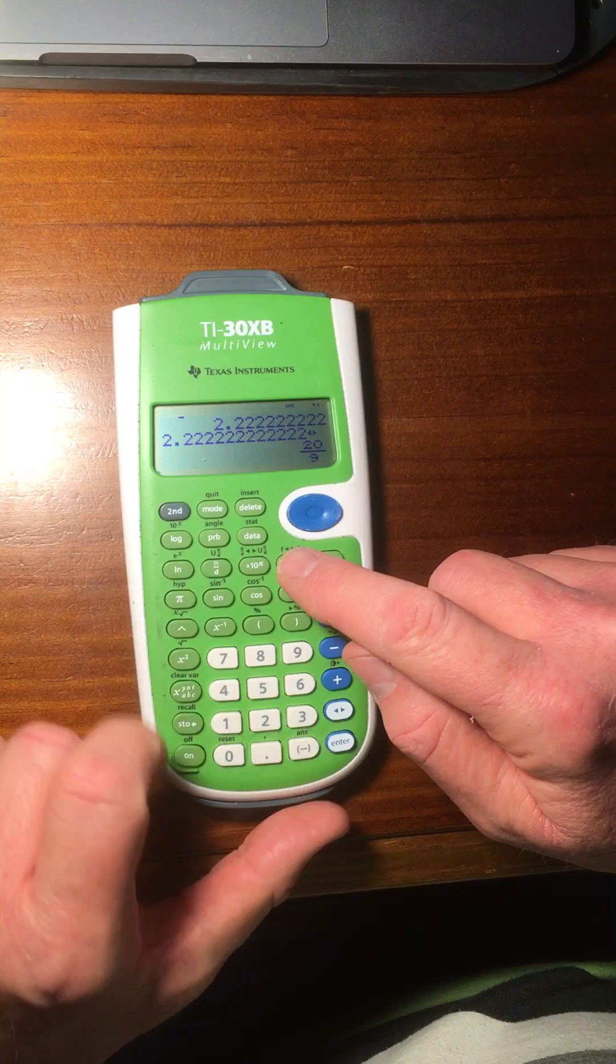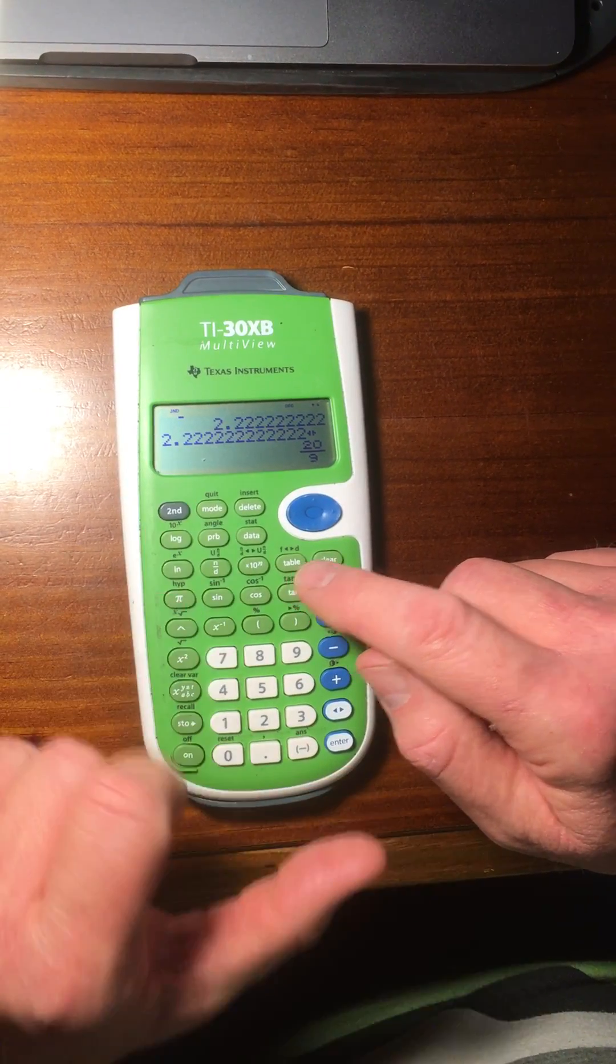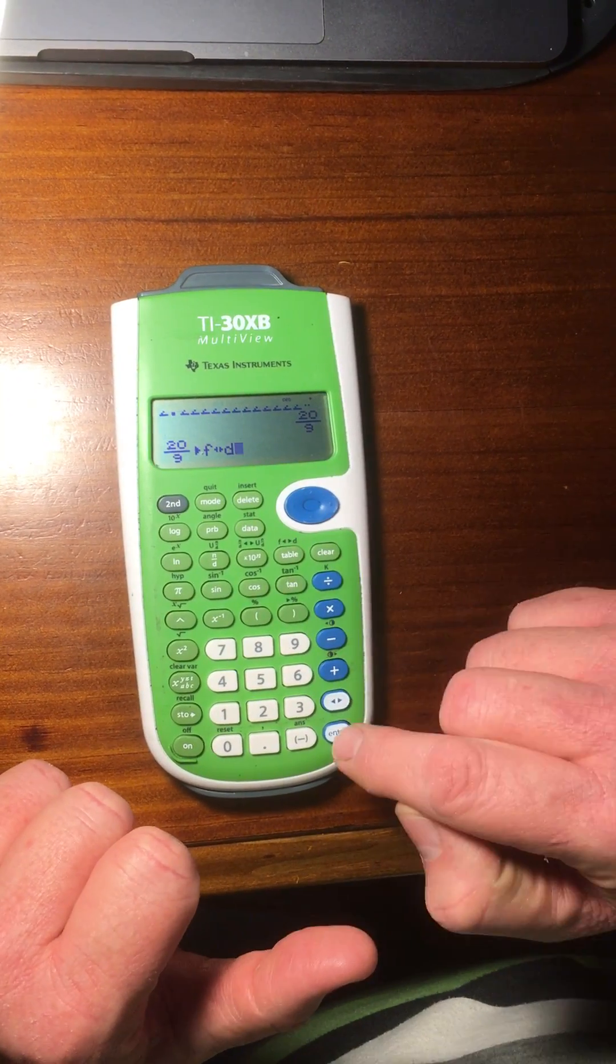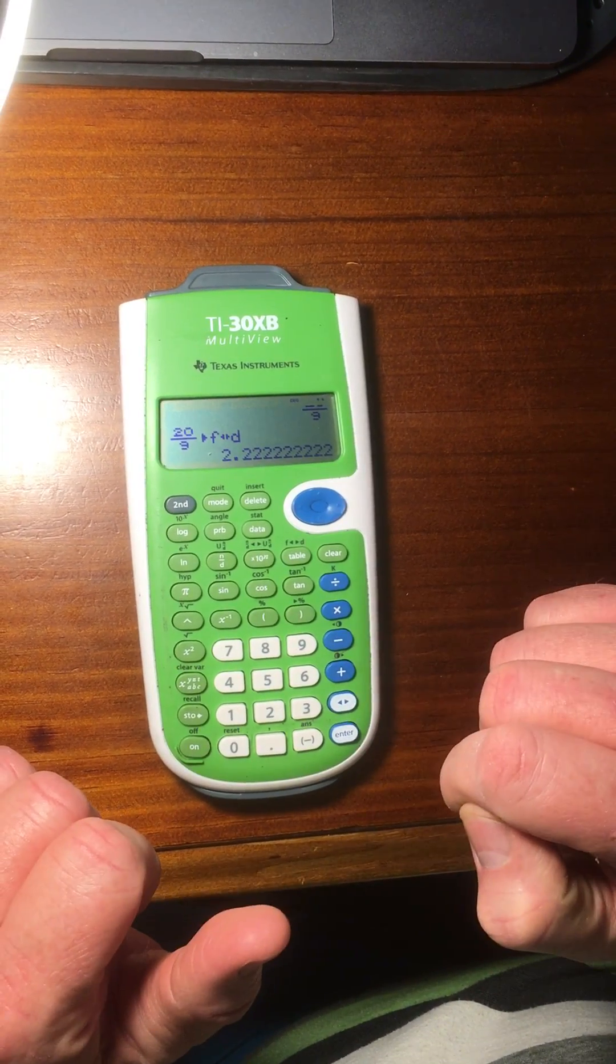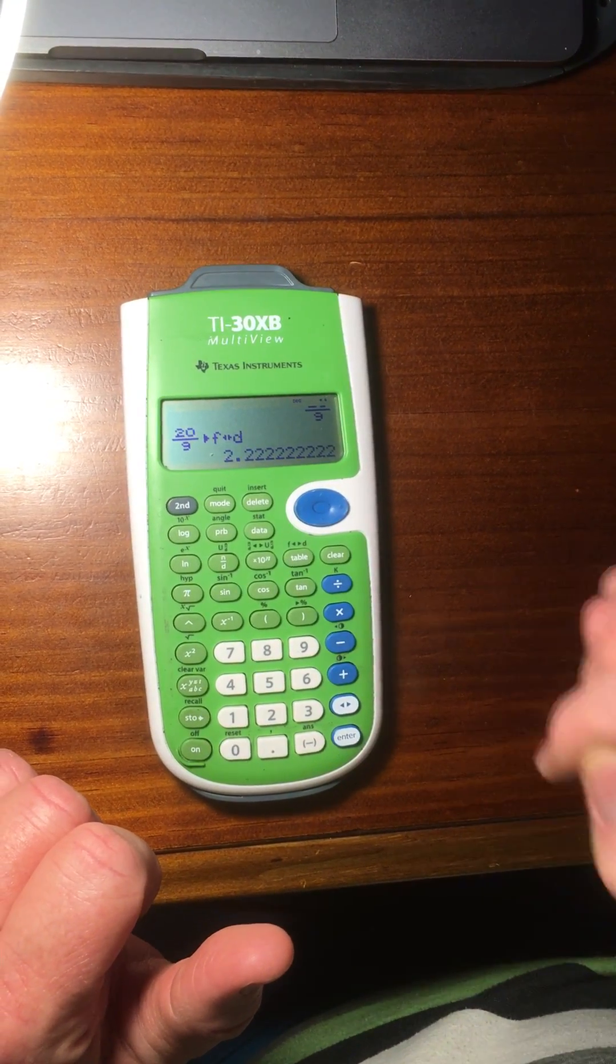And up here, on the Table button, second function, press Table, and it will change to a decimal as well. Thanks for listening.